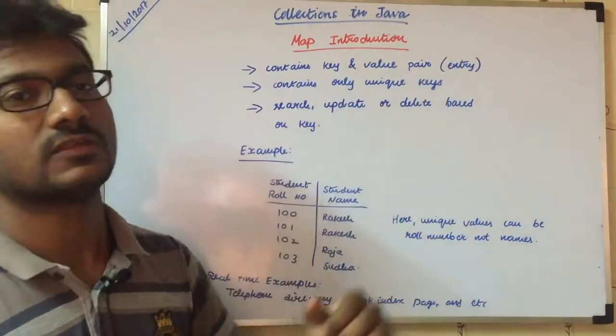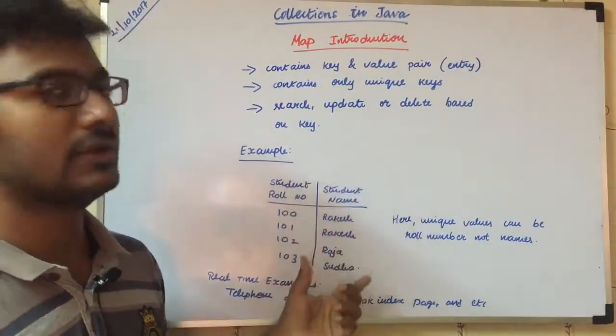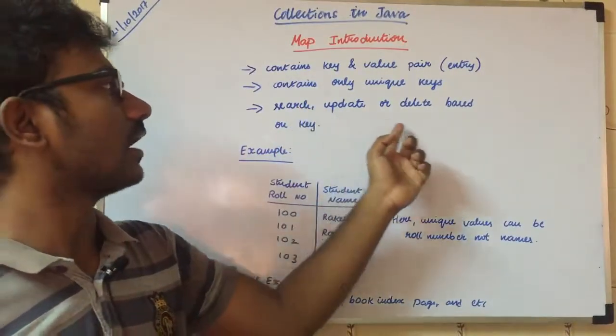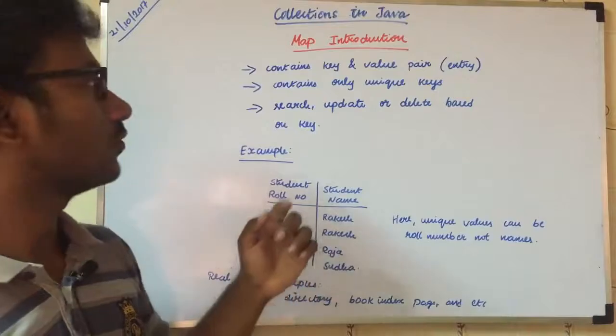Next property: Map contains only unique keys. Let me explain this with an example. It contains only unique keys. Next, we can search, update, or delete based on key.